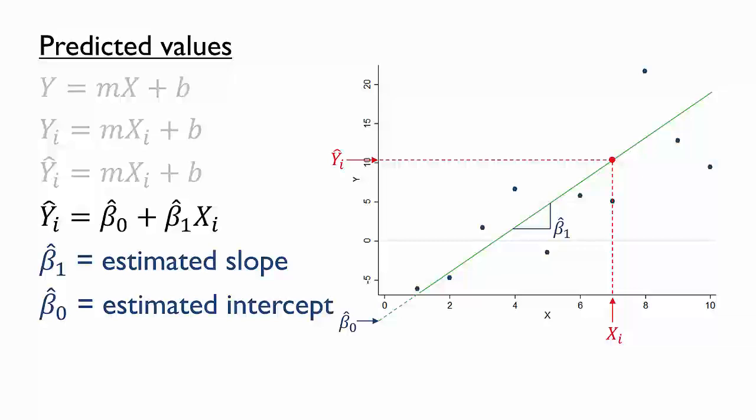For reasons that we will clarify by the end of this video, we will also place a hat over these betas to indicate that they are predicted or estimated values as well. If we find a way of estimating β̂₀ and β̂₁ from the dataset, we will be able to calculate the predicted y value for any data point.